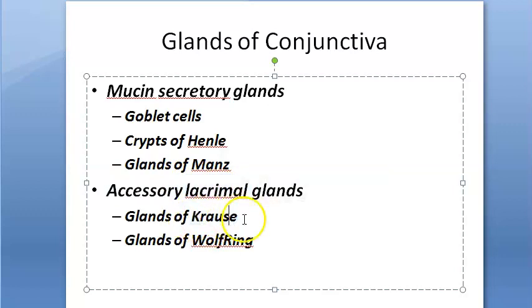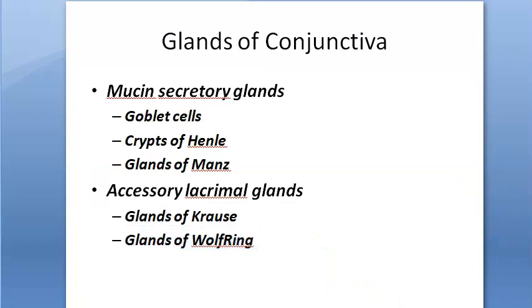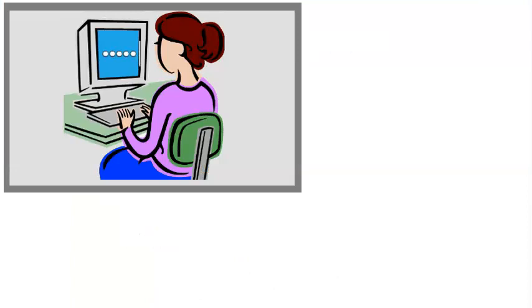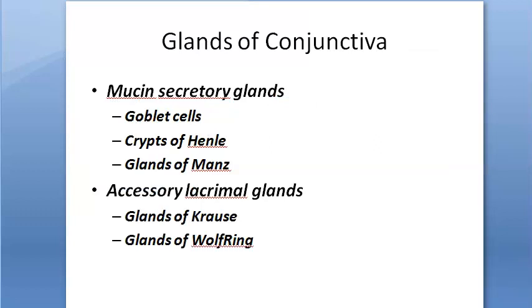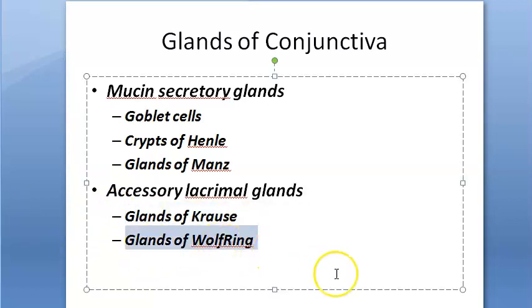A mnemonic to remember: K for Krause and W for Wolfring — 'lacrimal' means crying, so the Wolfring is making him cry. Krause glands are in the fornix; Wolfring glands are in the palpebral conjunctiva — upper border of superior tarsus and lower border of inferior tarsus.